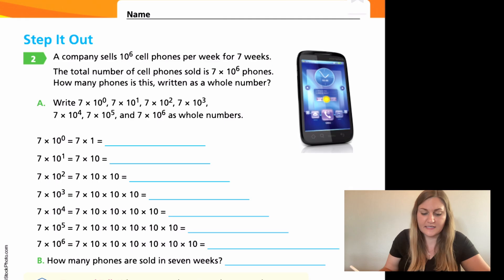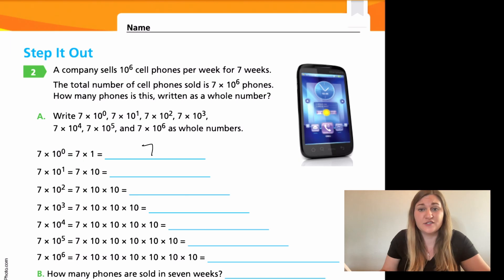Looking at this first line here, it says seven times 10 to the zero equals seven times one. Well, how can 10 to the zero equal one? Remember what this is saying is how many tens are showing up. If you have 10 to the zero, it means there aren't any tens. There are zero tens. There's nothing there. So it's just seven. Seven times one is seven. If I don't have any tens to show up, it's just seven. So that's why 10 to the zero means one, because it means there's no change. There's no multiplying anything.